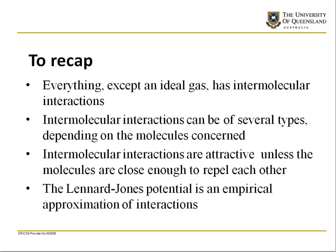To recap: everything except an ideal gas has intermolecular interactions, so if we're going to model these systems we need to take them into account. Intermolecular interactions can be of several types — Coulomb, dipole, induced dipole, and dispersion — depending on the molecules. These interactions are attractive unless molecules are very close to each other and close enough to start repelling. Finally, the Lennard-Jones potential is an empirical approximation of these interactions, and in the next lesson we'll see how this model can be used.